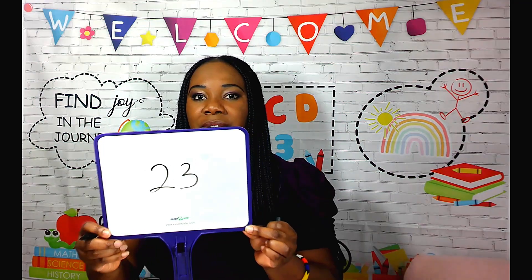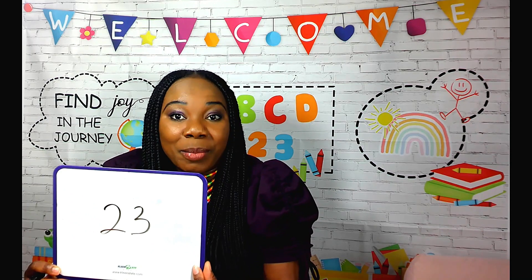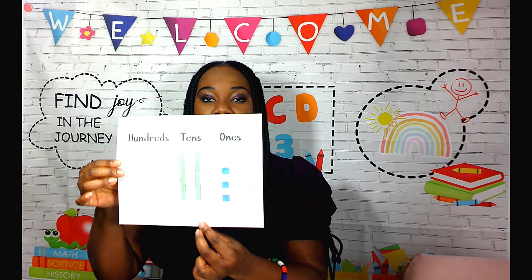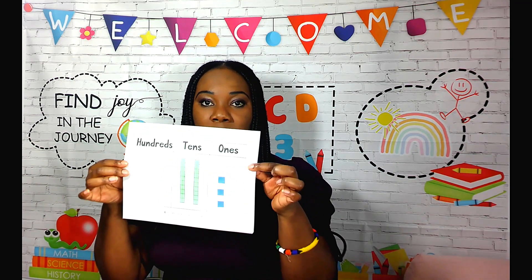I have written the number 23 on this board. An elementary learner should learn that 23 does not exist in isolation. An elementary learner needs to learn that the two digits in the number 23 each have a place — the 2 belongs in the tens place and the 3 belongs in the ones place.